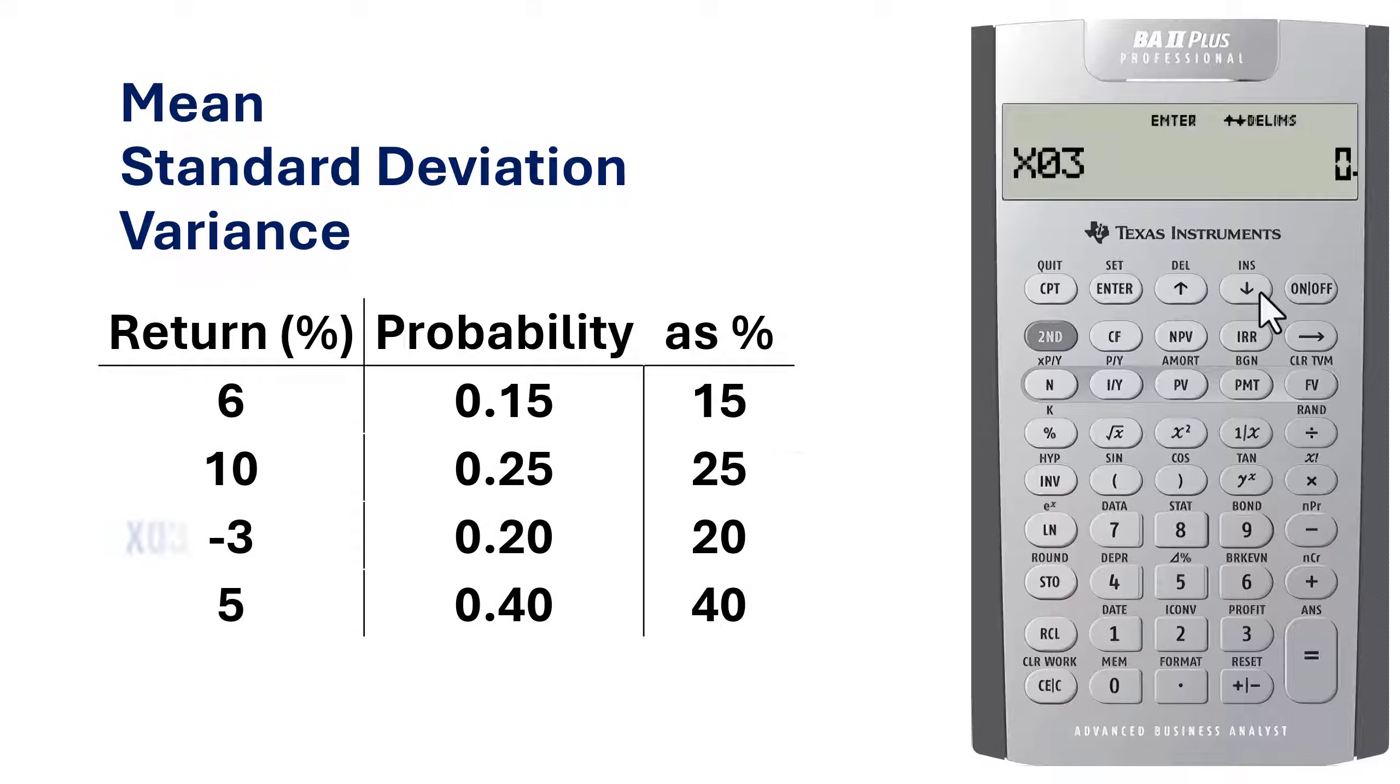Scroll down. For X3, I'll first press 3, then the plus minus button, Enter, scroll down. Y3 will be 20, Enter.